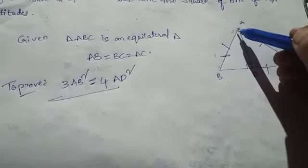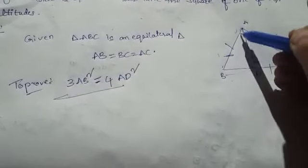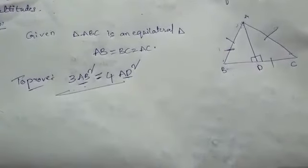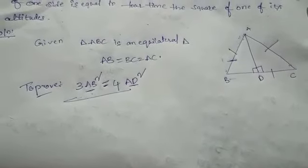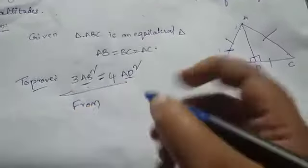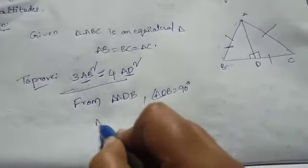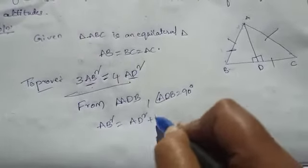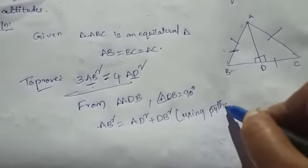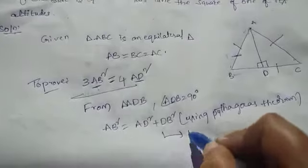Applying Pythagoras theorem for triangle ADB. ADB is a right angle triangle, so applying Pythagoras theorem. We need the equation in terms of AB and AD. From triangle ADB: AB square equal to AD square plus DB square. This is equation number 1.